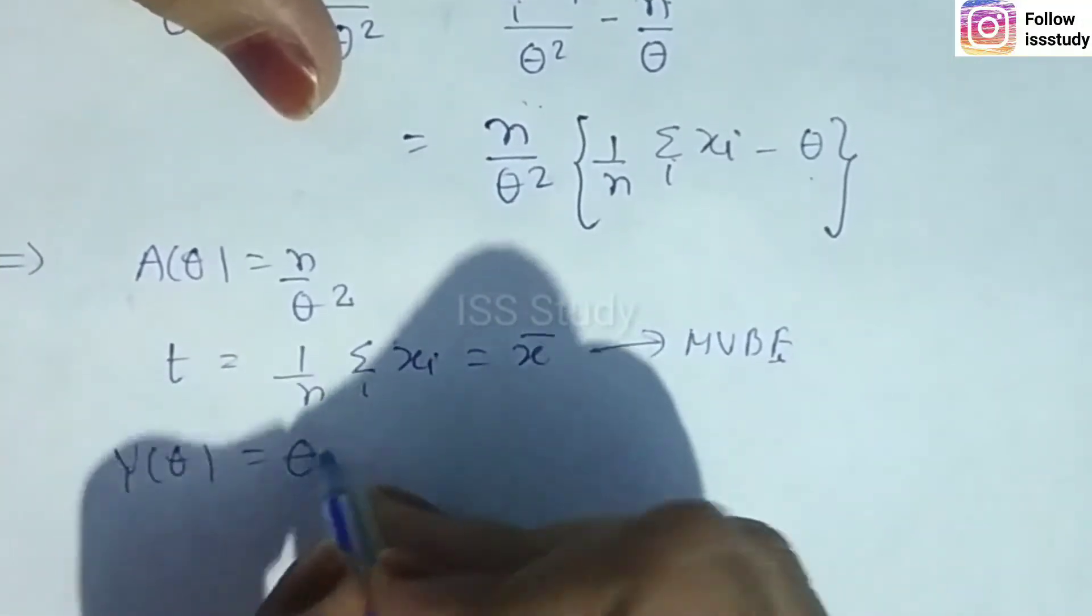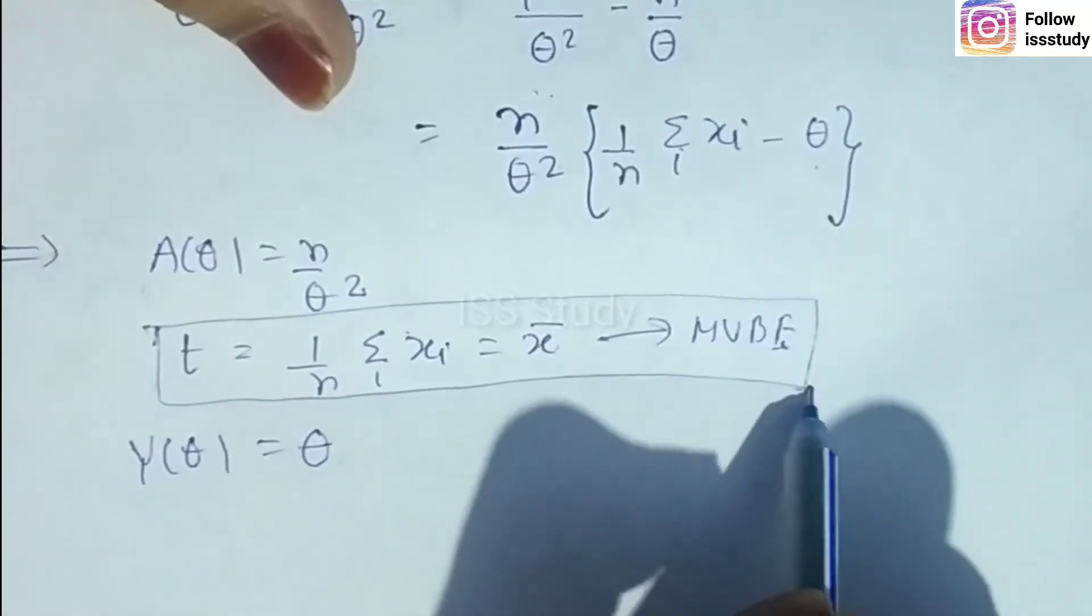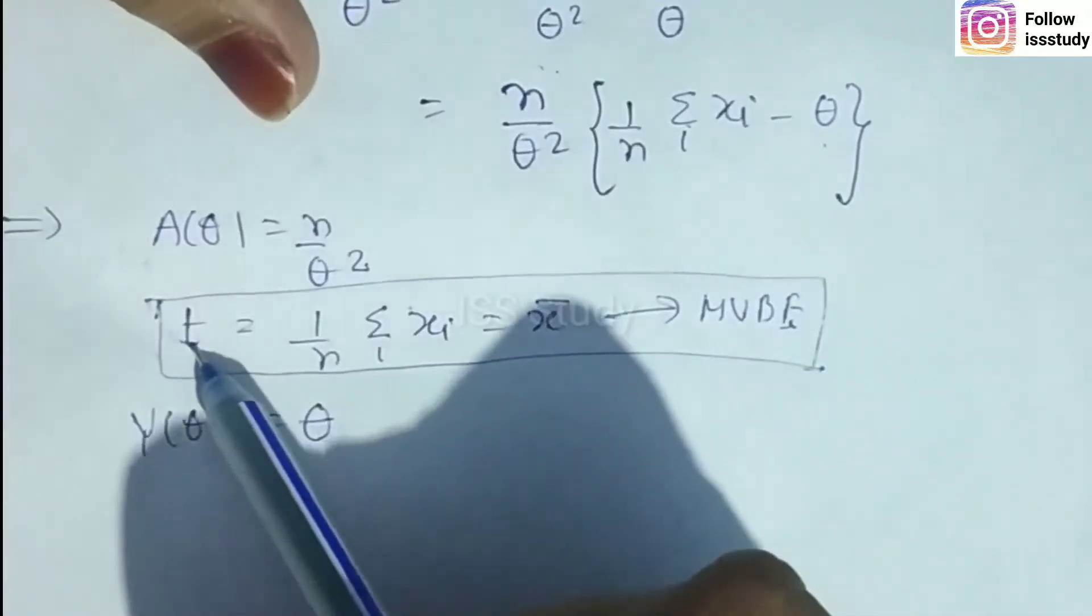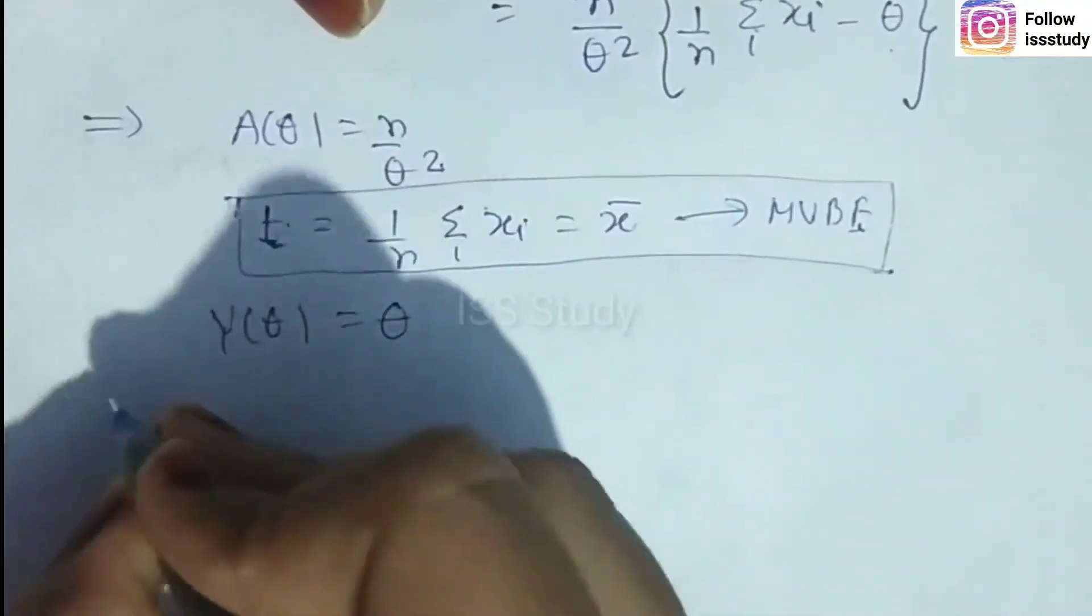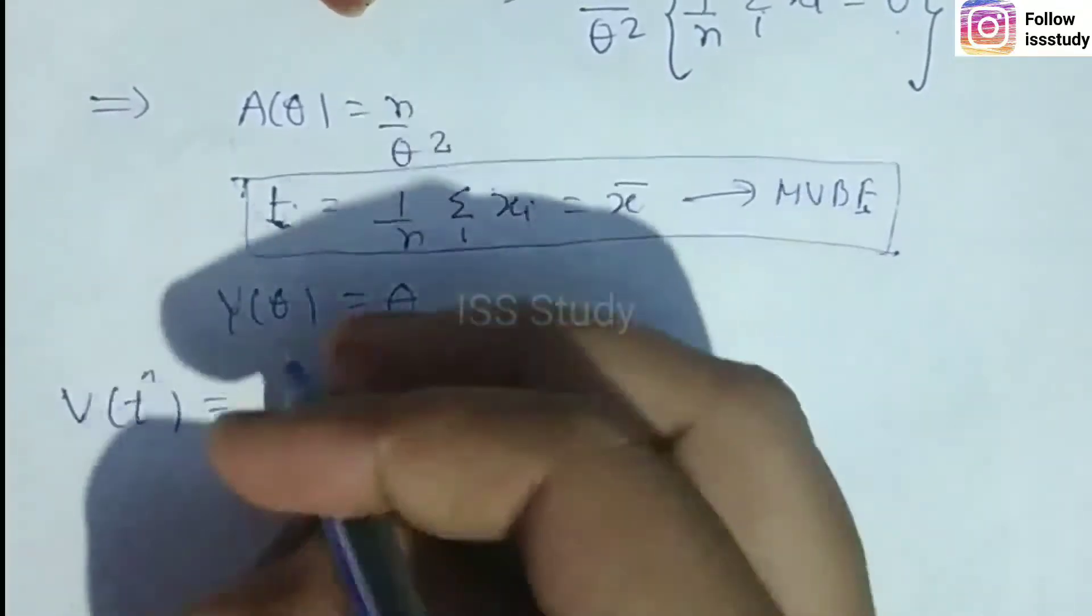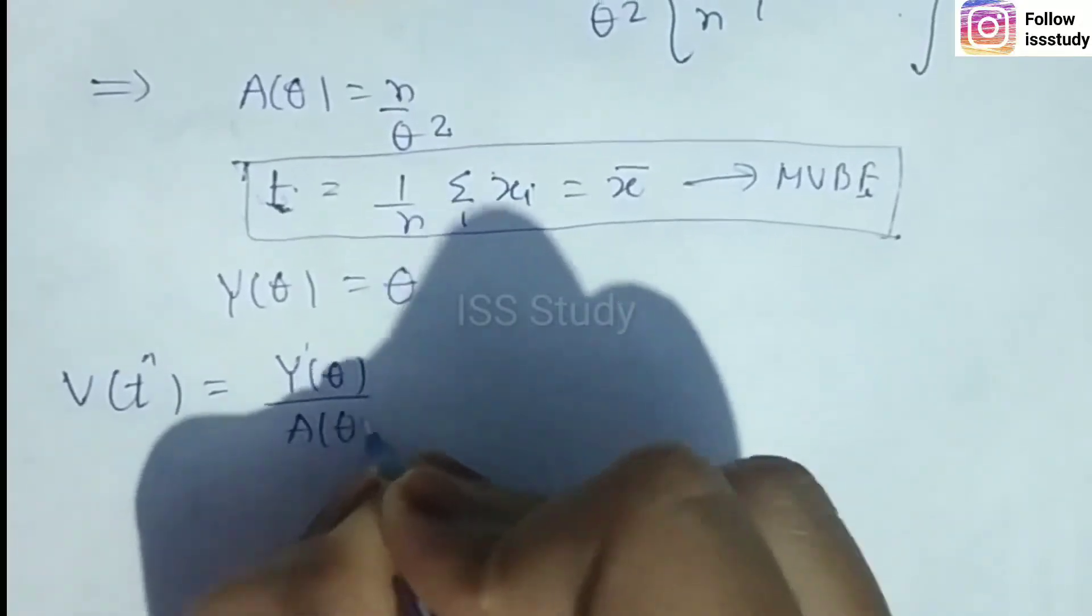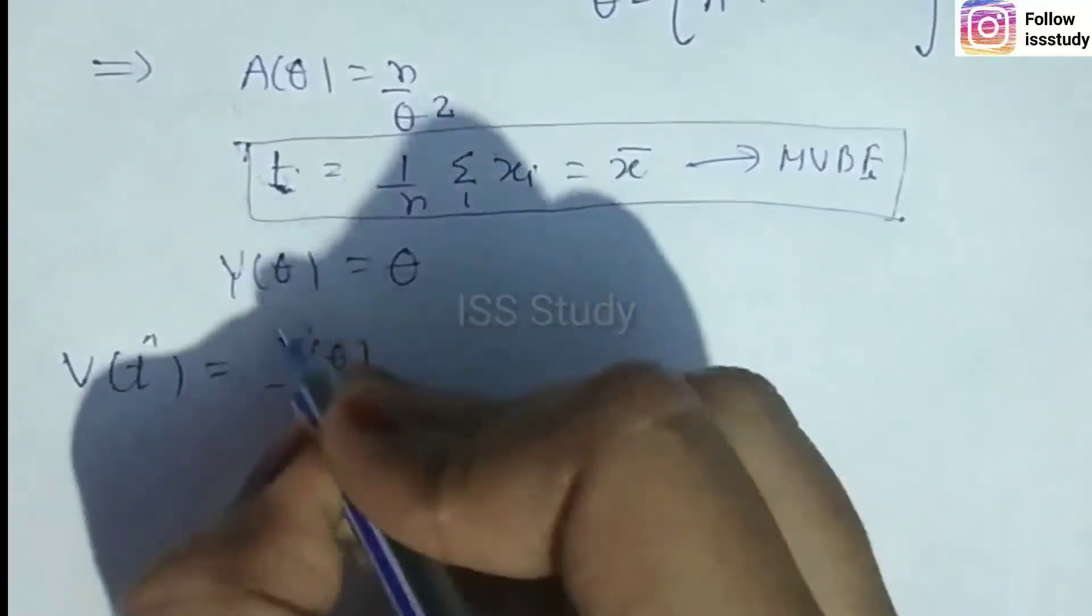Now we have the MVBE estimator. The question asks for the variance. I'll tell you the formula: V(T) = γ'(θ)/A(θ), if you remember.